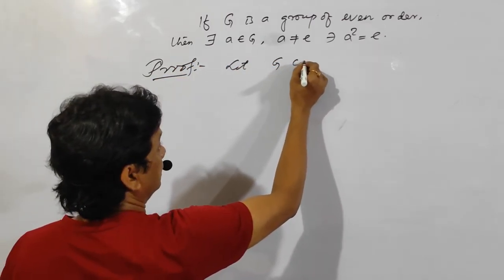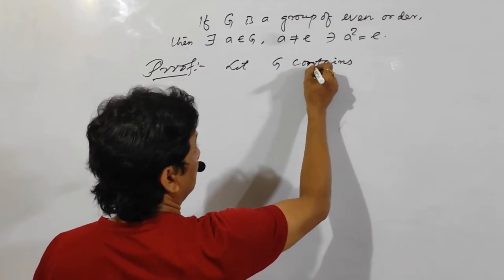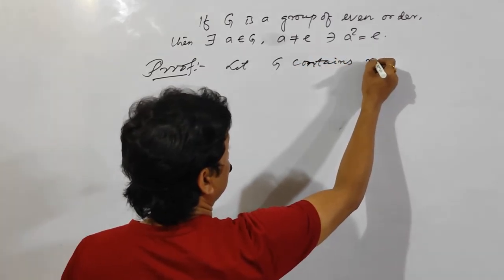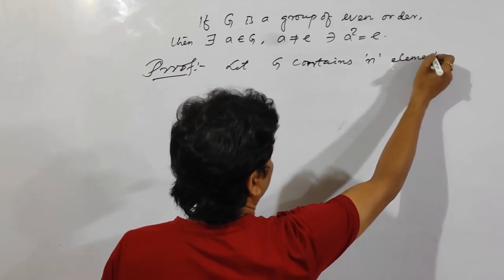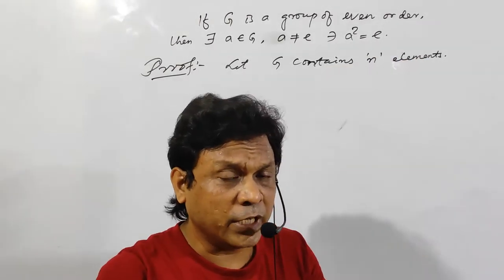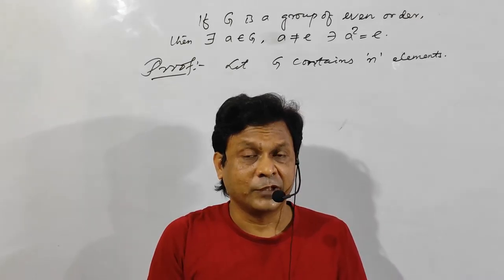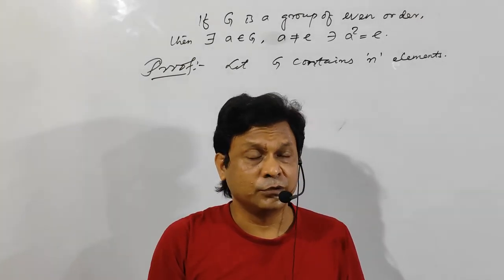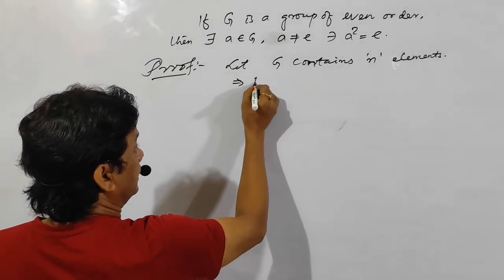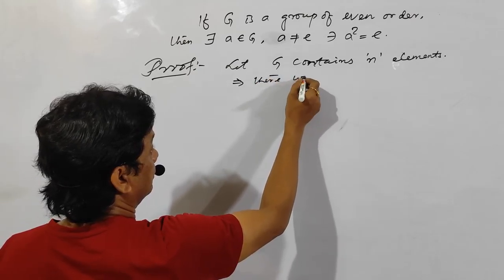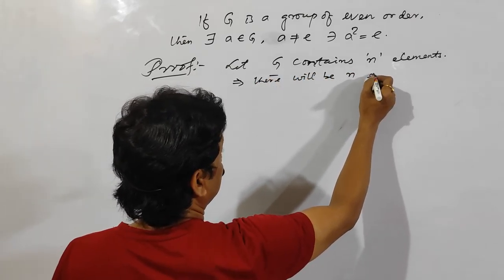Let G contain n elements. Then those n elements will have n inverse elements.